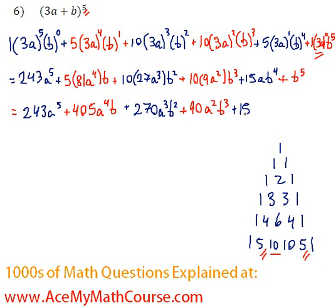Plus 15 a, b to the 4, plus b to the 5. That's it. And the whole thing combined is our final answer. The full expanded version of 3a plus b to the 5.